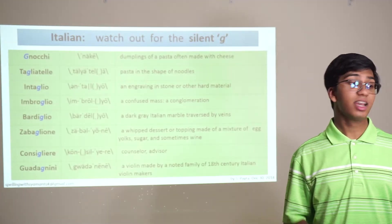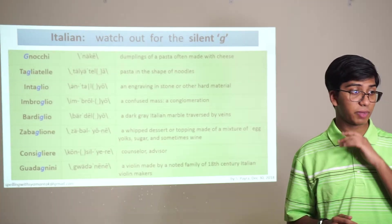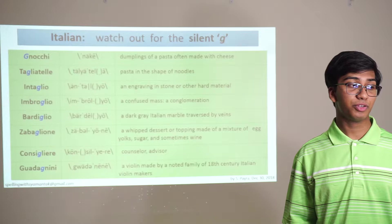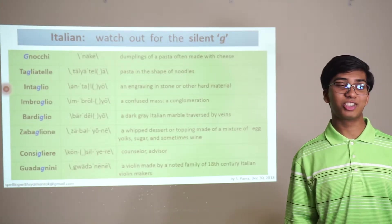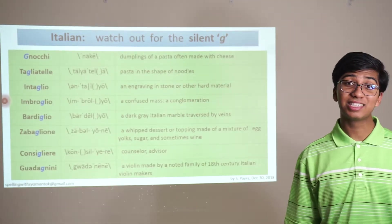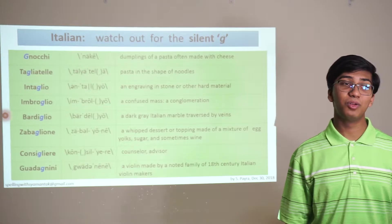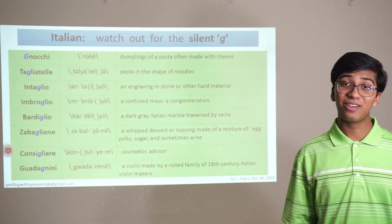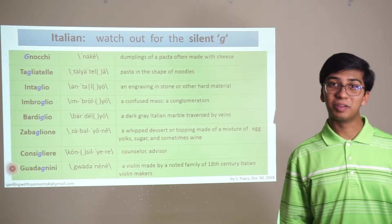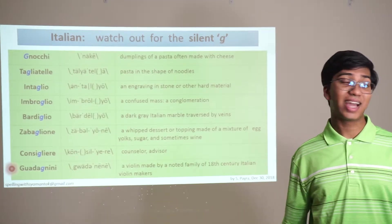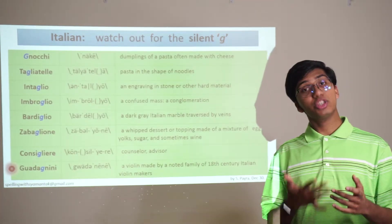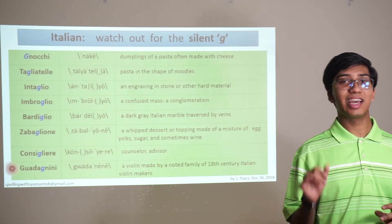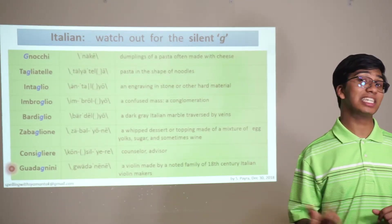One thing to watch out for in Italian is that there's often a silent G where you least expect it. The word gnocchi — dumplings of pasta made of cheese. Tagliatelle — pasta in the shape of noodles. Intaglio — an engraving in stone or other hard material. Imbroglio — a confused mass or conglomeration. Bardiglio — a dark grey Italian marble with lots of veins. Zabaglione — a whipped dessert made of egg yolks and sugar. Consigliere — a counselor. And Guadagnini — a violin made by a family of the same name. All united by a silent G, usually before an L or an N.